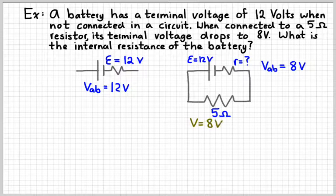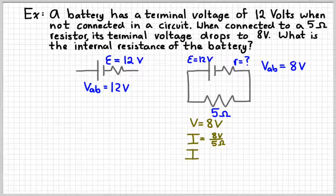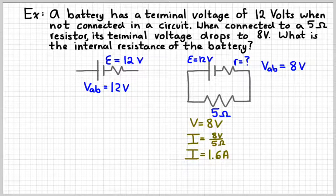The voltage across my 5 ohm resistor has to be the same as the terminal voltage of the battery. And so that would be 8 volts. And so if I use Ohm's law, 8 volts over 5 ohms would give me 1.6 amperes.